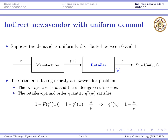Let q*(w) be the retailer's best response. The probability of having a shortage should equal w over p, where w is the overage cost and p is the sum of overage and underage cost — this is the basic newsvendor formula. With uniform distribution, capital F equals x and small f equals one, giving us the retailer's best response formula.